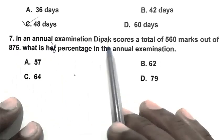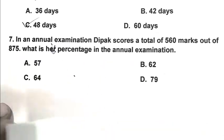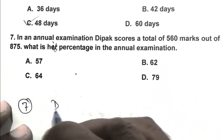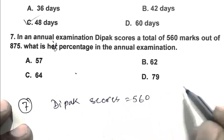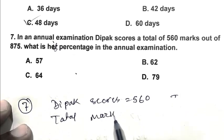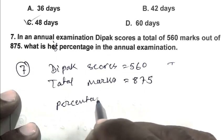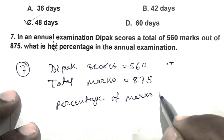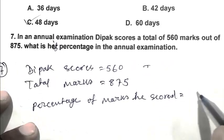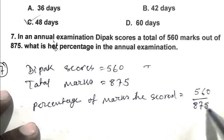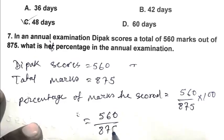Question number 7. In an annual examination Deepak score a total of 560 marks out of 875. What is his percentage in the annual examination? Deepak score 560, total marks 875. So percentage of marks he score is 560 by 875 multiplied by 100. We write it 560 divided by 875 multiplied by 100.